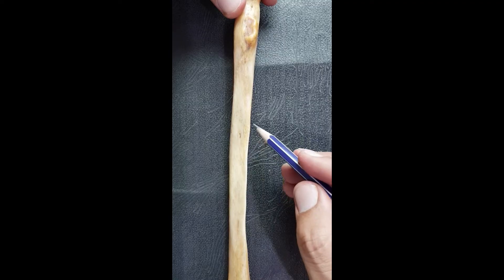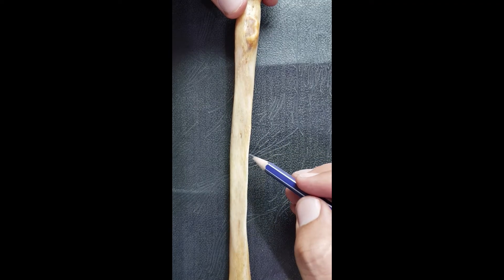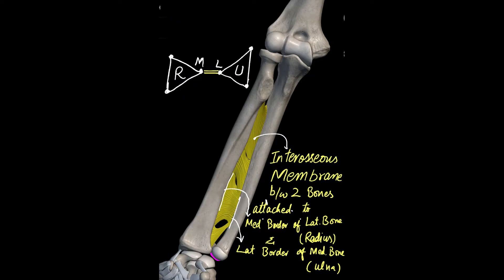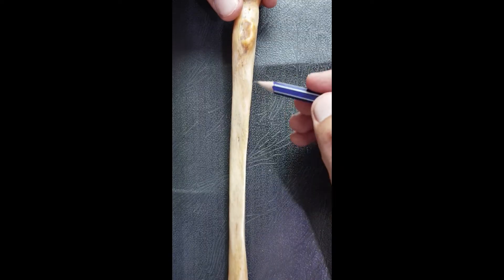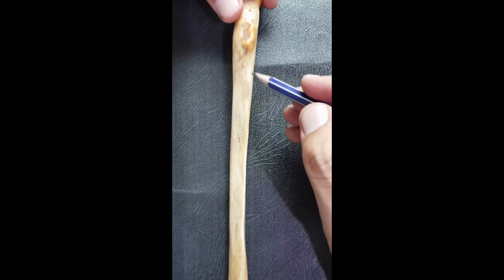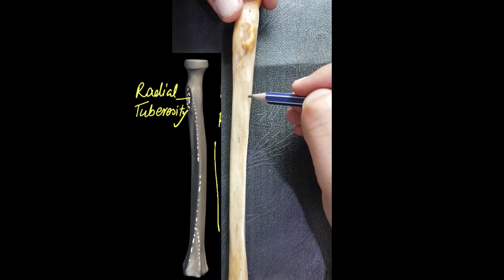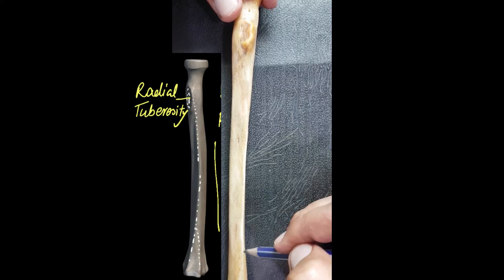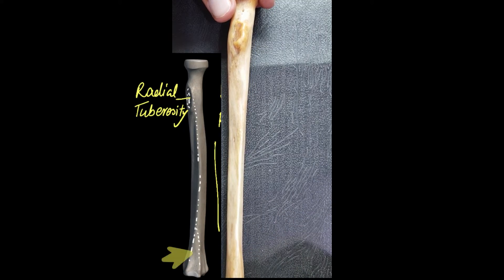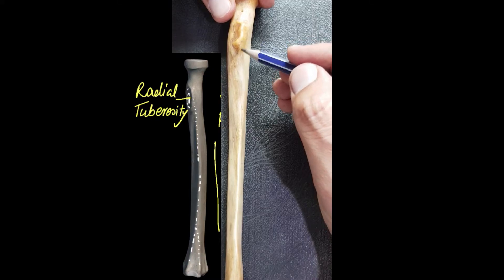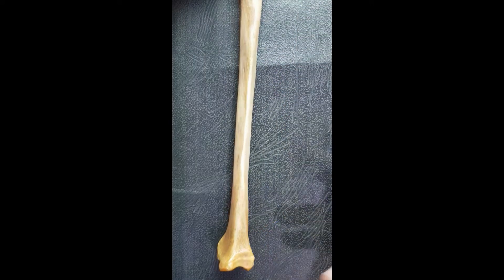The medial border is very sharp because it gives attachment to the interosseous membrane, whose other end is attached to the ulna bone. So the interosseous border of the radius is towards the ulna and is known as the medial border, while the ulna has an interosseous border towards the radius known as the lateral border of the ulna. For tracing the medial border, the radial tuberosity is helpful — from the posterior aspect of the radial tuberosity we trace this medial border downward into the ulnar notch.